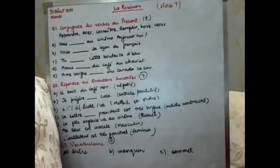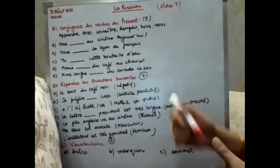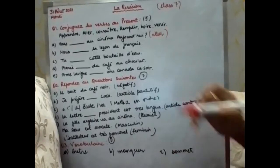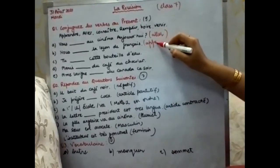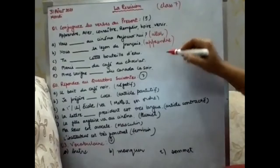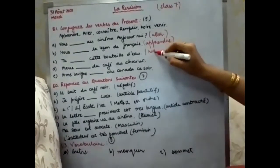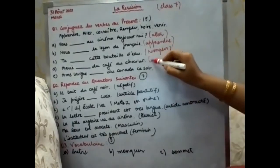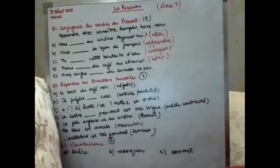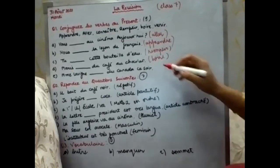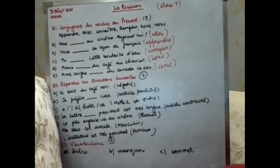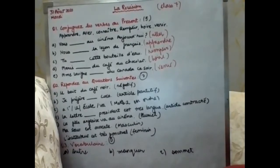According to the meaning of the sentence you need to conjugate the verb. The first is: you go to the cinema — use the verb 'aller'. We learn the French lesson — use 'apprendre'. You fill the water bottle — use 'remplir'. Marie drinks chocolate coffee — use 'boire'. Mademoiselle Levine is coming from Canada this evening — use 'venir'. Conjugate according to the subject.